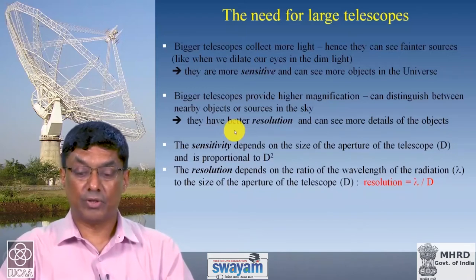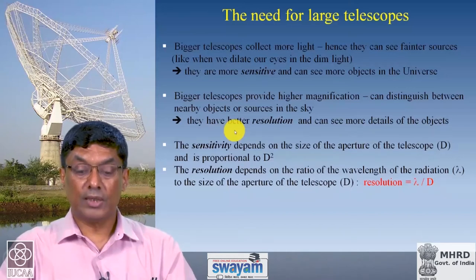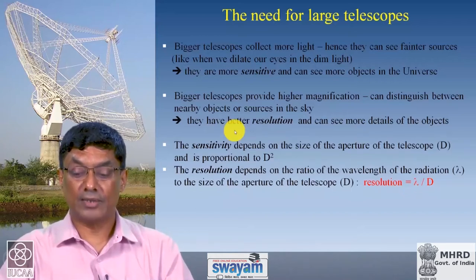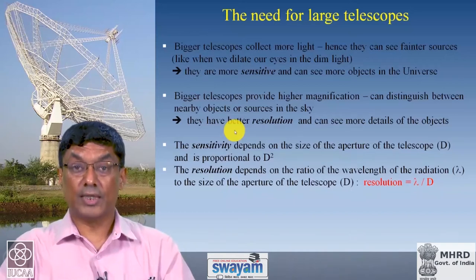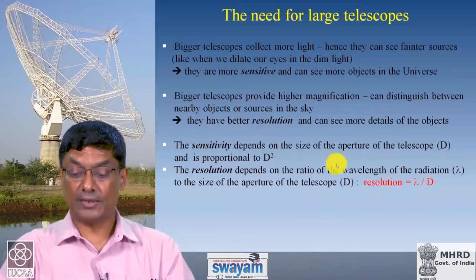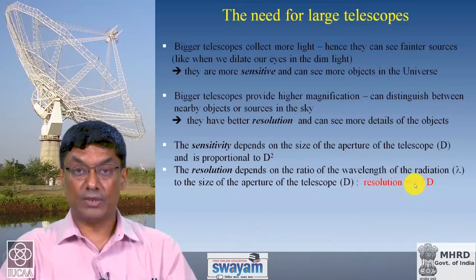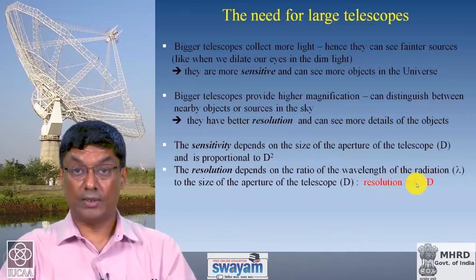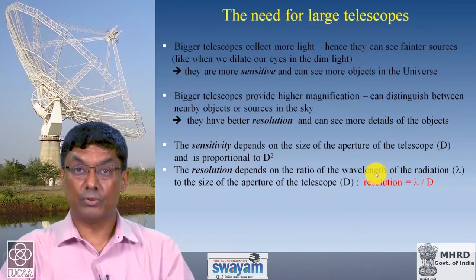You can see more details of objects. Both the sensitivity and the resolution of a telescope depend on the size of the aperture. Sensitivity goes as the square of the aperture because area determines how much light you collect. Resolution goes inversely as the size of the aperture and the wavelength — so for a given wavelength, a larger telescope gives better resolution. For a given aperture, working at a larger wavelength reduces resolution, which will be important when we go to radio astronomy.